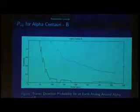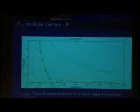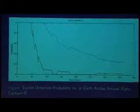Here is an example. If we were to send a nanosatellite up to observe the same star and an Earth-like analog around Alpha Centauri B, what would be the probability of detecting one transit and two transits? The blue line represents the probability of detecting at least one transit around Alpha Centauri B for an Earth analog at different periods. The red line is the probability of detecting at least two transits. We expect the probability to decrease as the period increases because we're only sending a satellite up for one to two years.